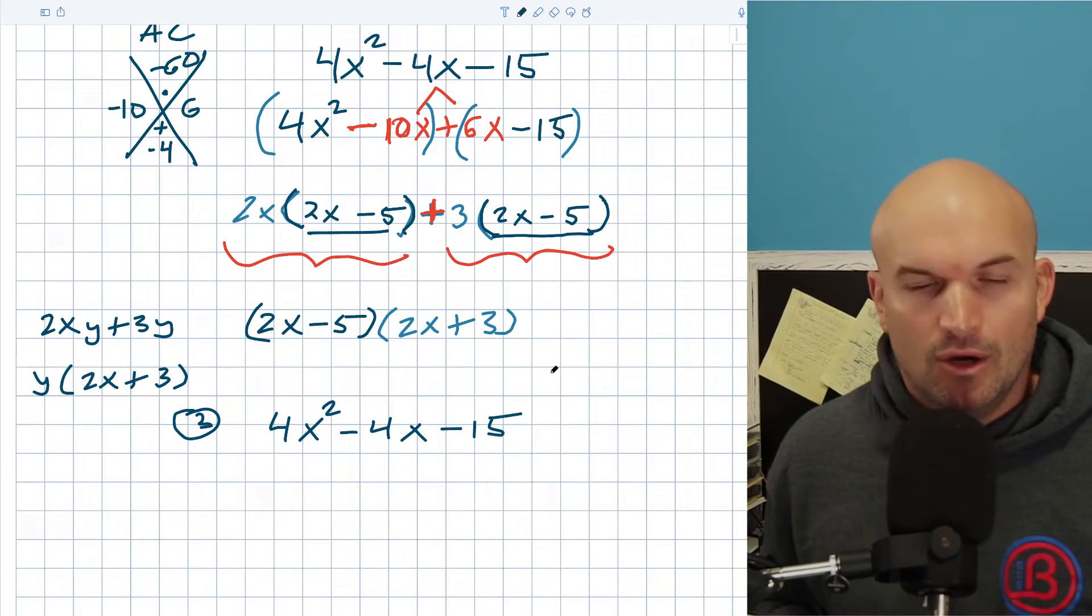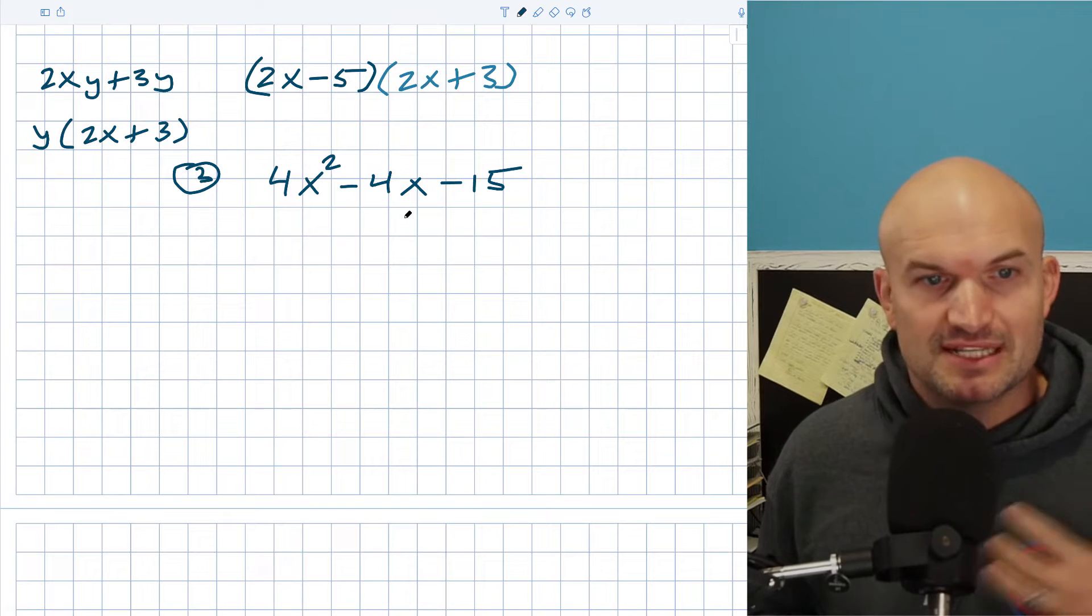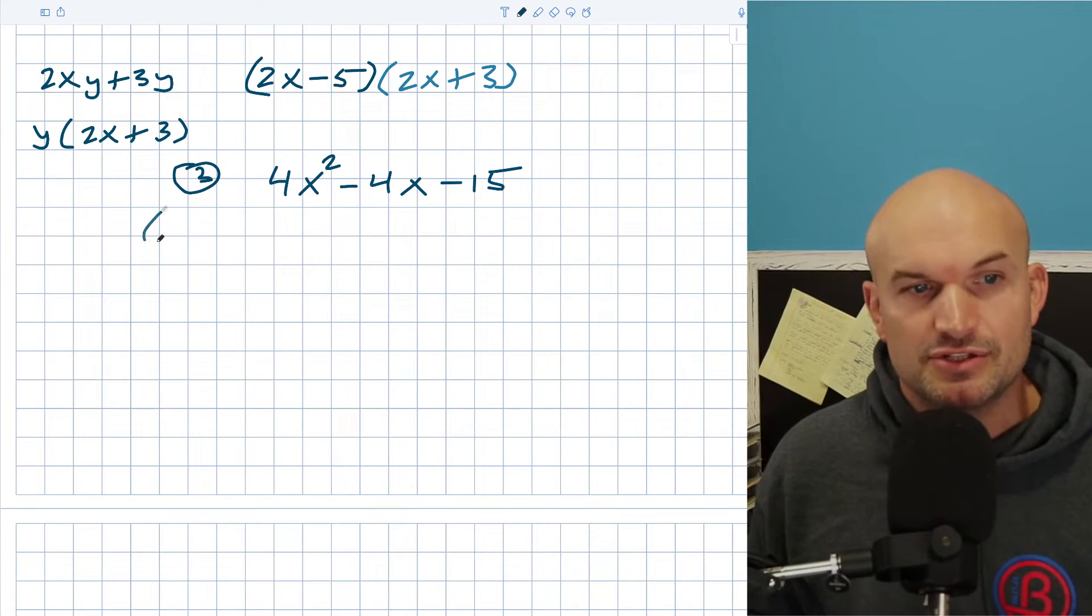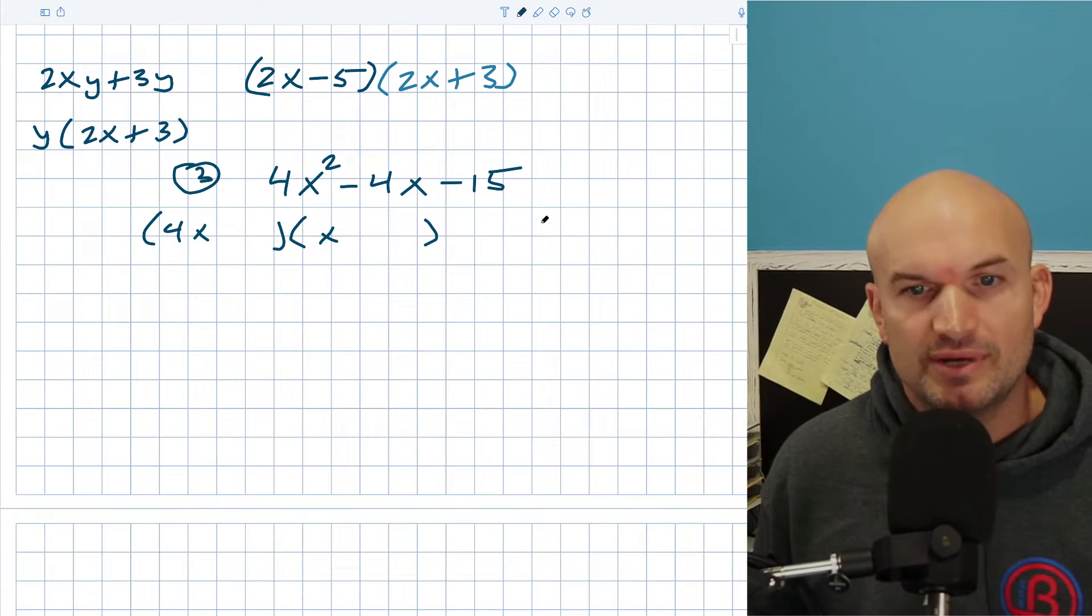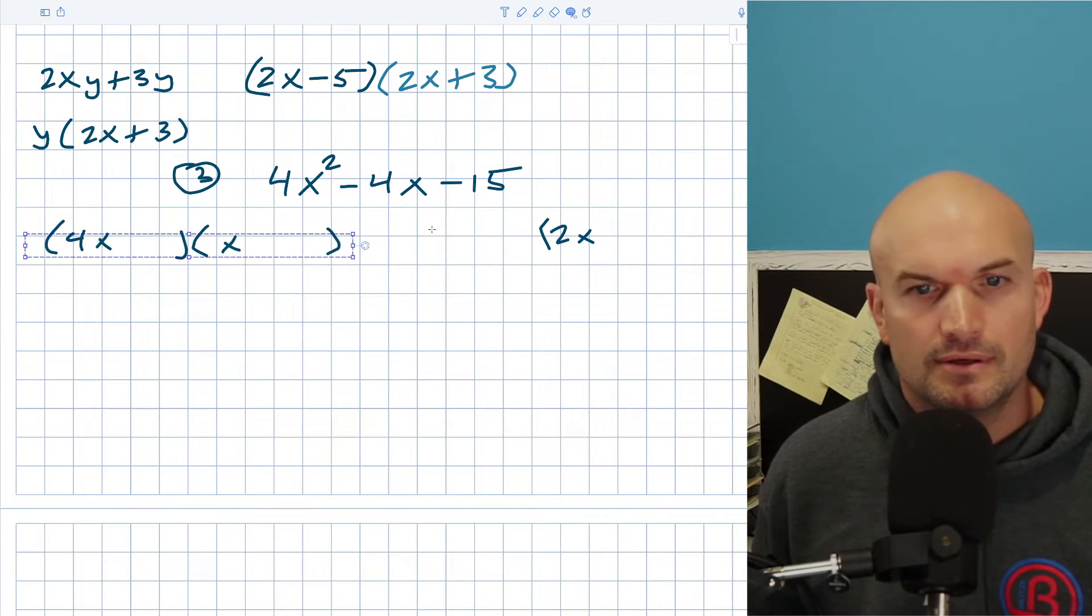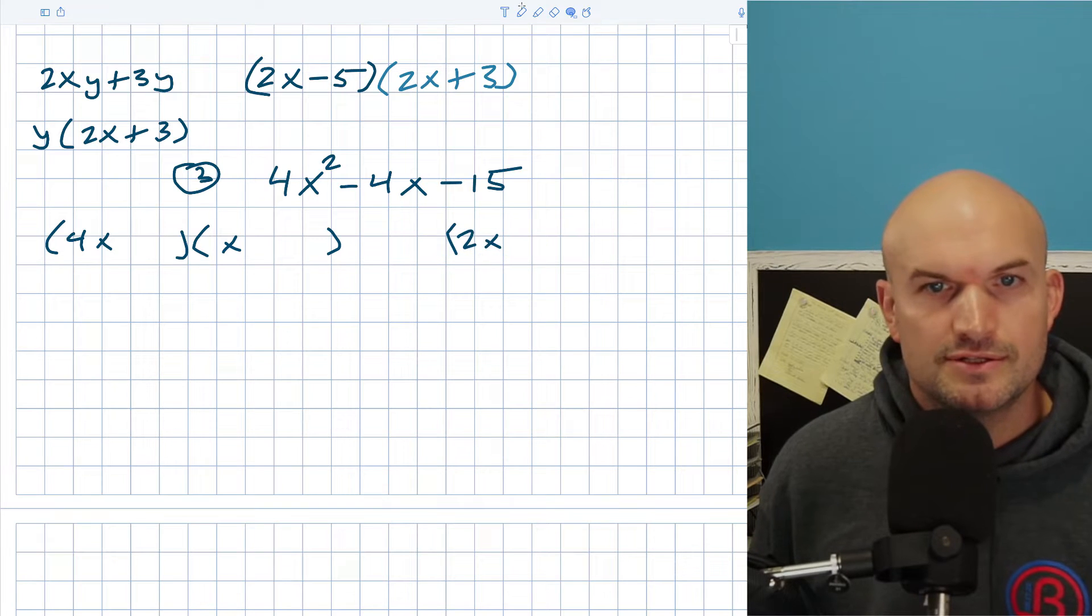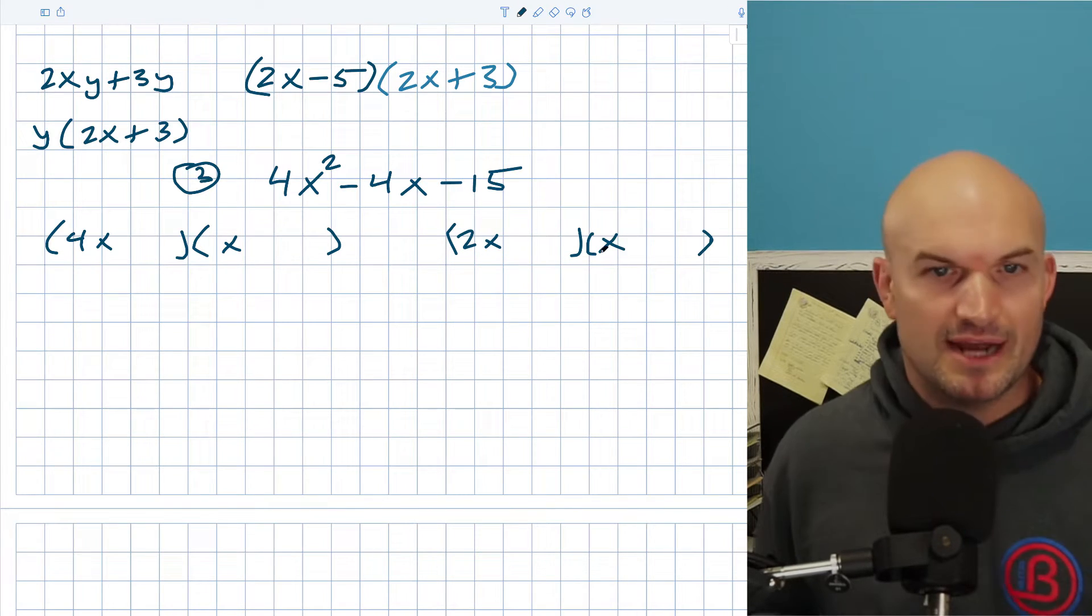What you're going to want to do is what I always like to do on a problem like this. I like to say, all right, this can be broken down into a product of two factors, right? So four X times X, or we could do two X times X.